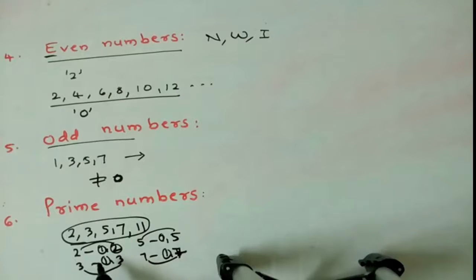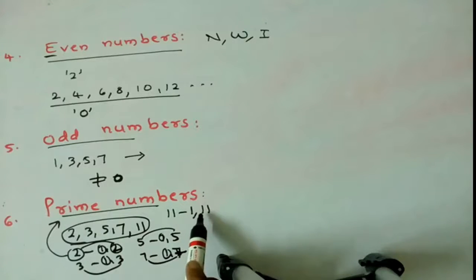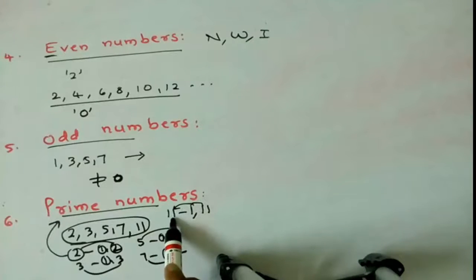So which number has divisors 1 and itself, those numbers we can call as prime number. Prime number is nothing but the number which has divisor 1 and itself. For example, take 11. These divisors: 1, 11. So the 11 has 1 and itself. These 2 are divisors for 11. So 11 we can call it as prime number.